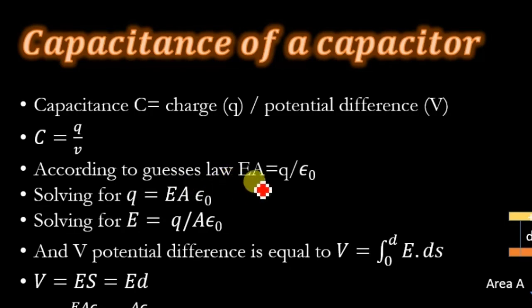the electric field line passing through a specific area is equal to the total charge enclosed by that area divided by epsilon naught. Solving this equation for charge Q, we get Q = EA𝜀₀. And solving for electric field E, we get E = Q/(A𝜀₀).